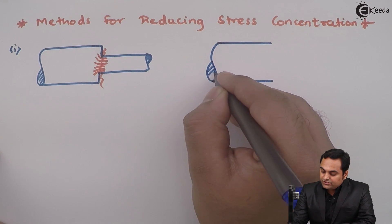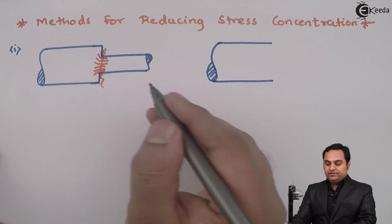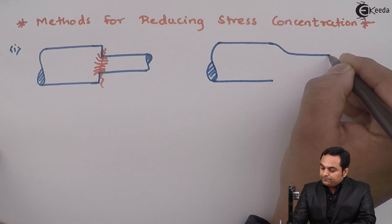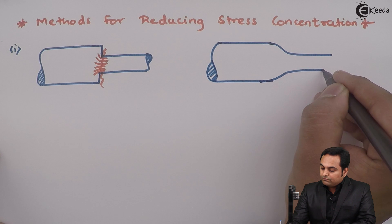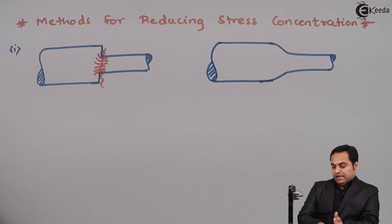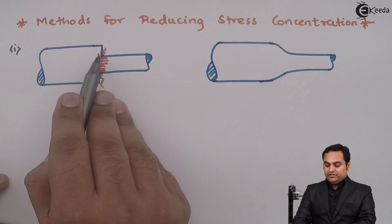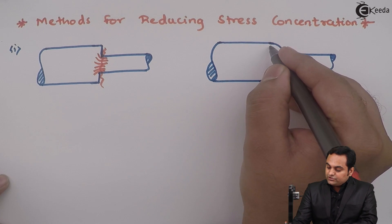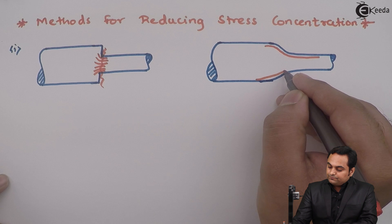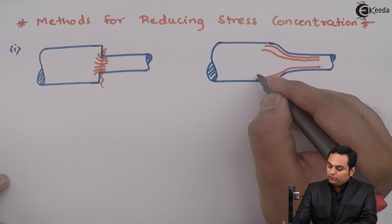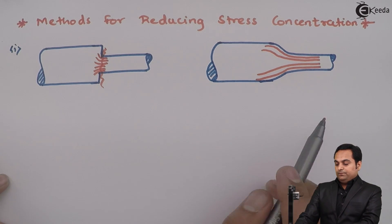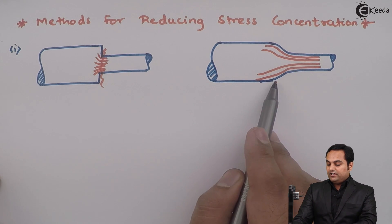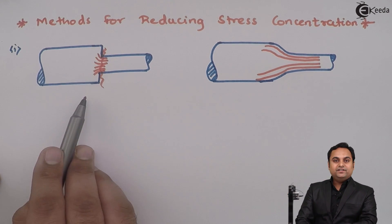Instead of decreasing the area suddenly, we can decrease it gradually. As we can see from both diagrams, at first the area was decreasing suddenly and now it is decreasing gradually, so the stress distribution is more uniform — the stress will flow at a uniform rate. This is one method of reducing stress concentration: changing the area gradually instead of suddenly.